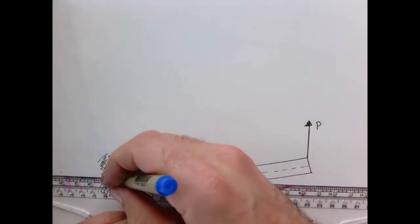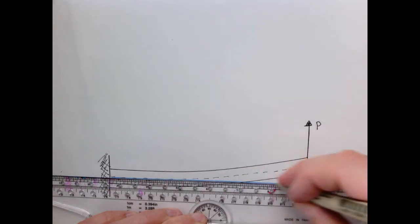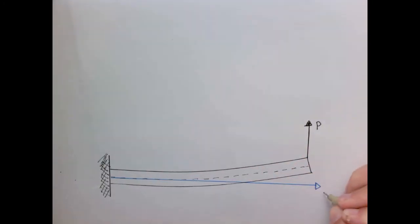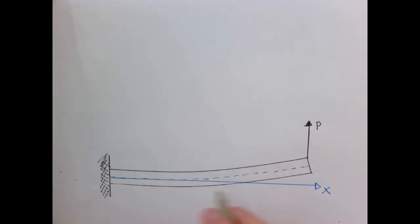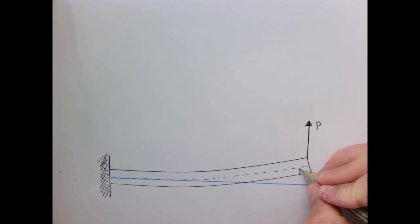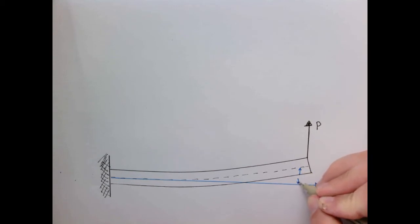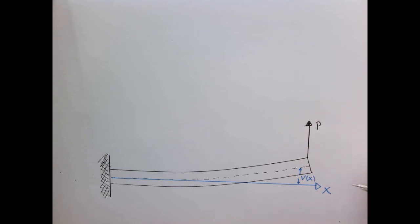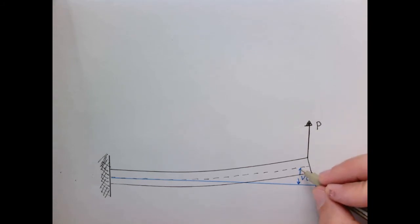Let's define our coordinate direction: a line coming out from the wall will be x. When the beam is at equilibrium, the neutral axis lies right along that axis. What we're going to describe is the deflection from the neutral axis — this distance we're going to call v, which is a function of x. So v will be the deflection or displacement of the neutral axis from the equilibrium point.